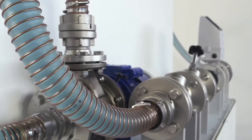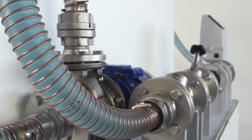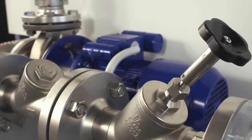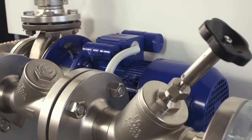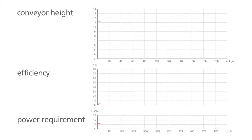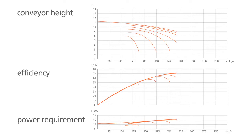A centrifugal pump should draw in as little undissolved gas as possible. Gas bubbles could collect in its centrifugal force field in the impeller or casing and interfere with the flow. This will have a significant impact on the pump's characteristic curve and operating behavior.